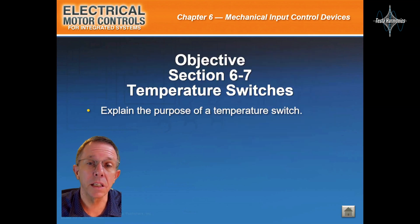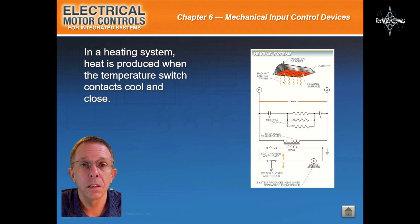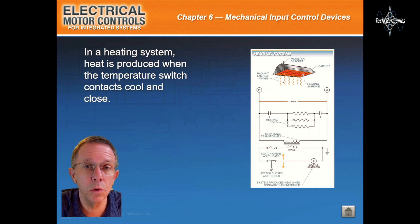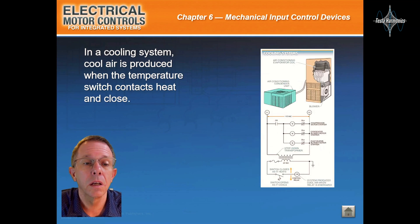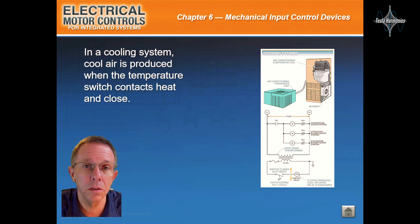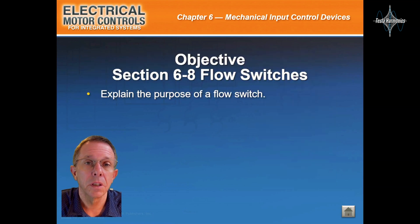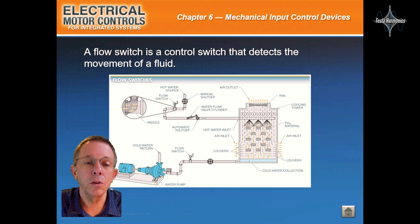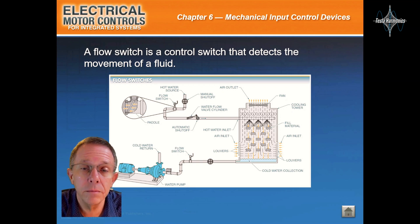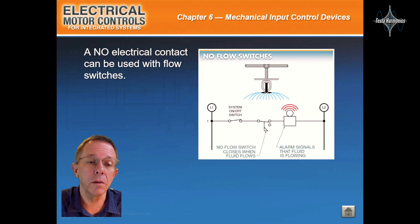Section 6-7: Temperature Switches. In a heating system, heat is produced when the temperature switch contacts cool and close. In a cooling system, cool air is produced when the temperature switch contacts heat and close. Section 6-8: Flow Switches. A flow switch is a control switch that detects the movement of a fluid. A normally open electrical contact can be used with flow switches.